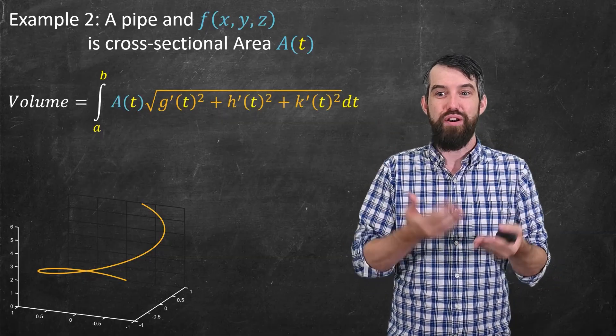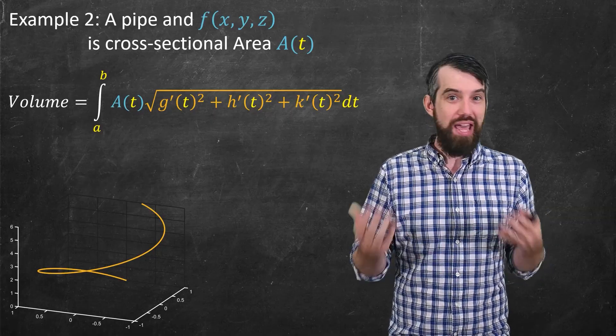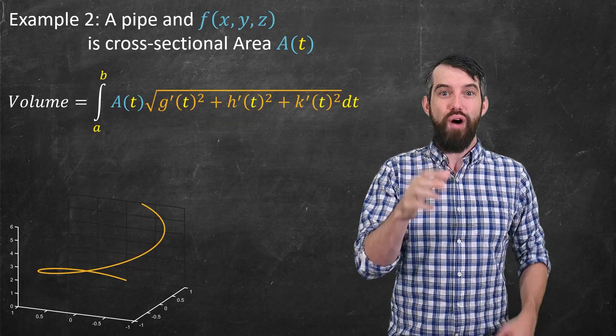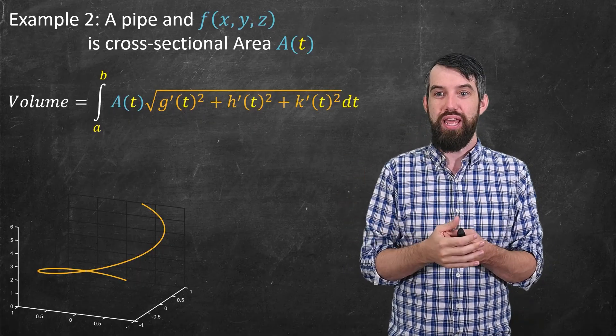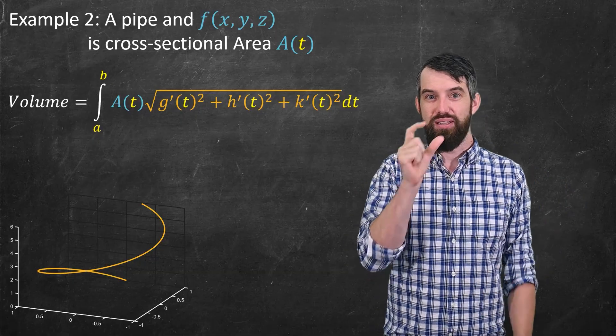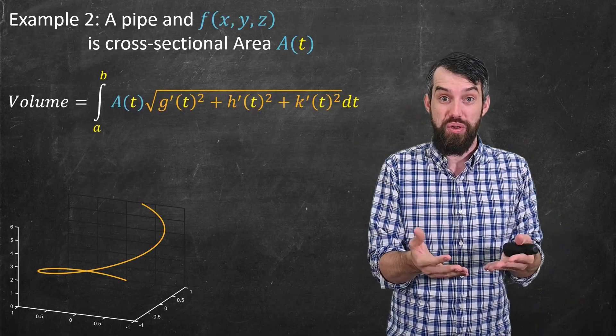Well then, it's again a line integral where your function here now represents that cross-sectional area. The way I think about this is, again, if I take a little unit of arc length, well then the volume represented by that change in arc length is just the area that I have at that spot, this a(t), times the little infinitesimal distance of arc length. Add all those up, and you get the total volume.